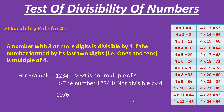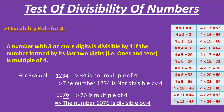Now let's check the second number, which is 1076. The last two digits form the number 76. We have 76 as a multiple of 4. Therefore, since 76 is a multiple of 4, the number 1076 is divisible by 4.